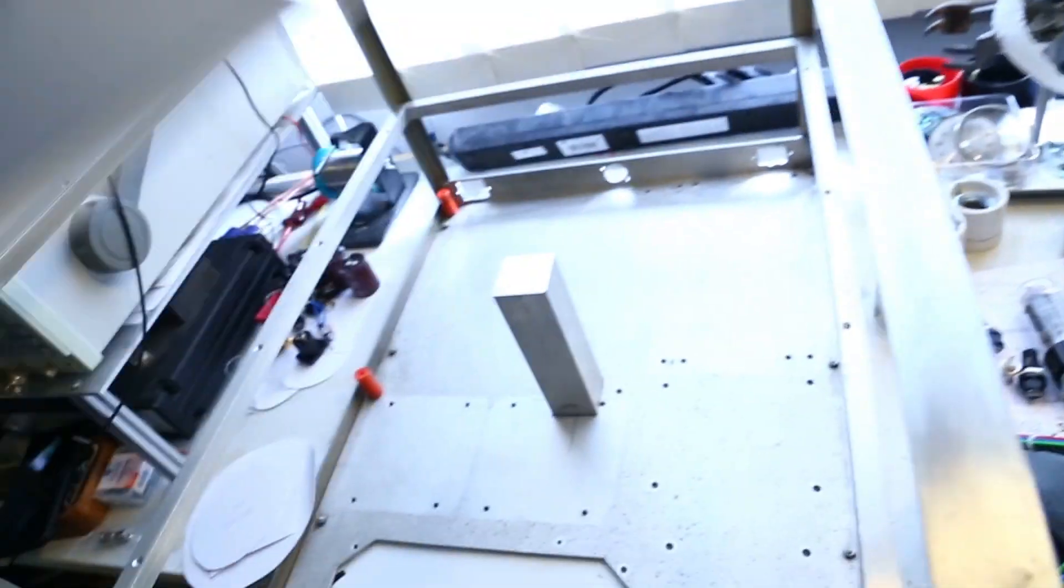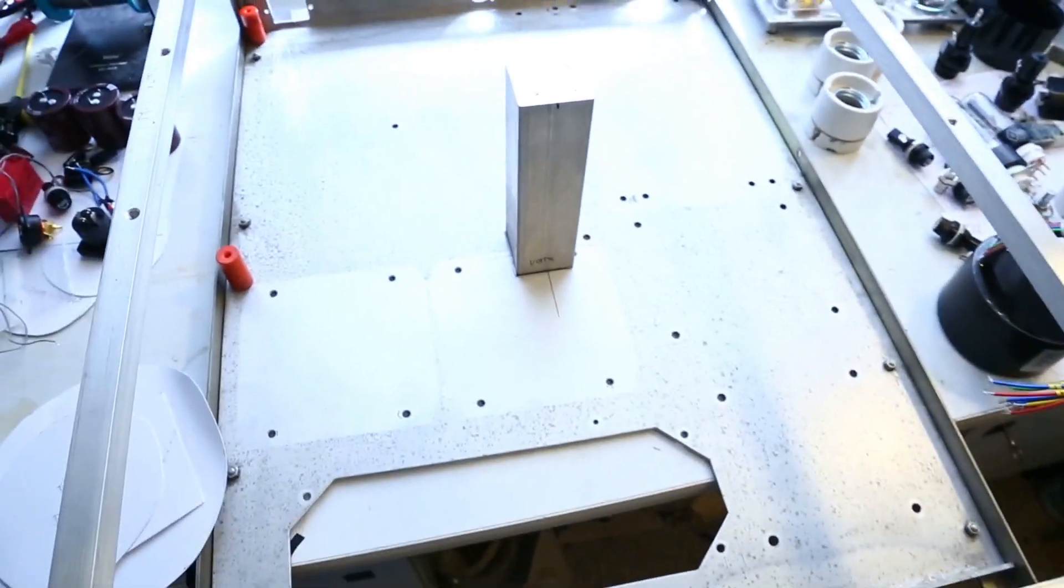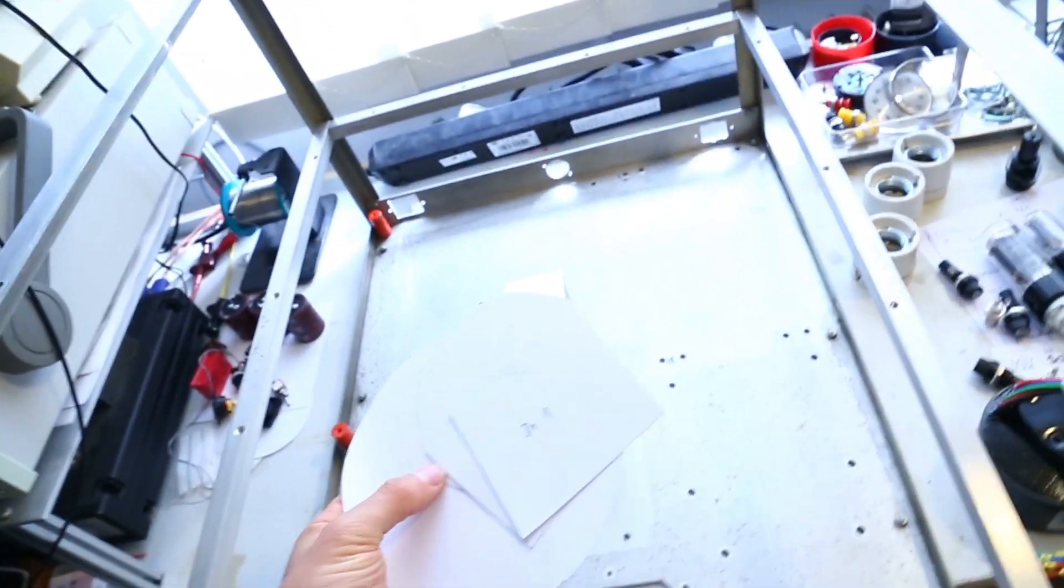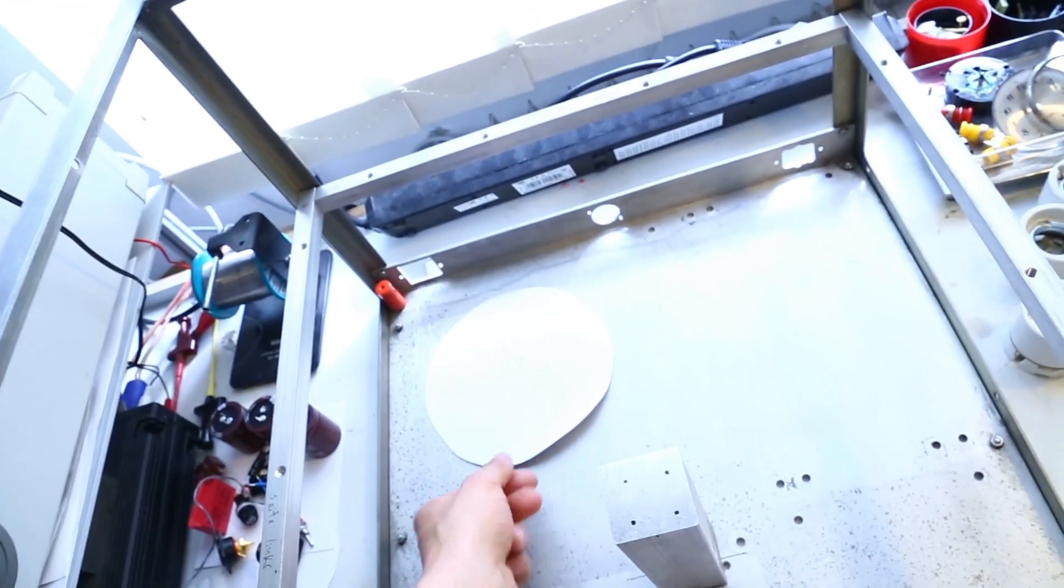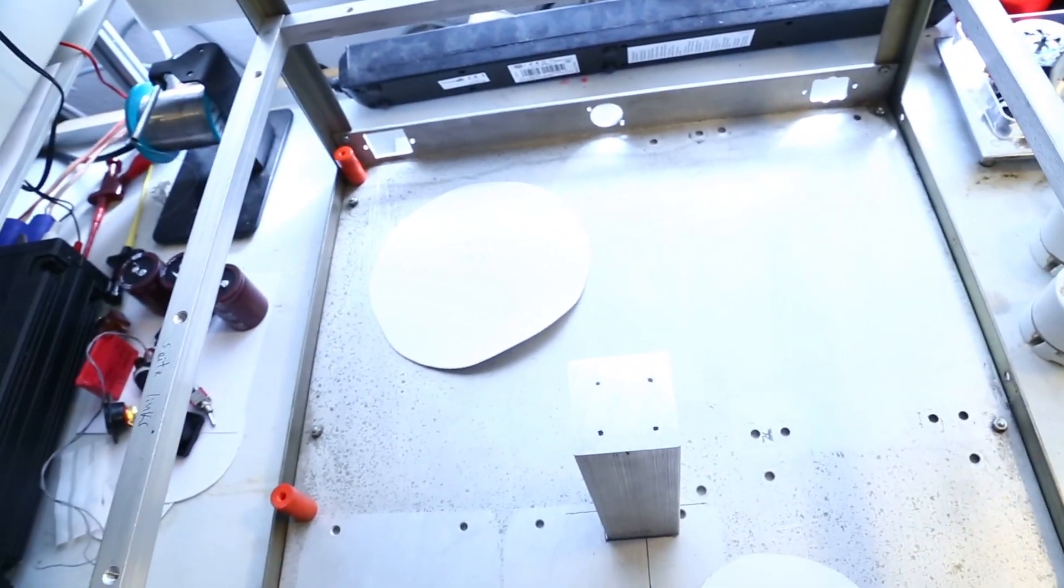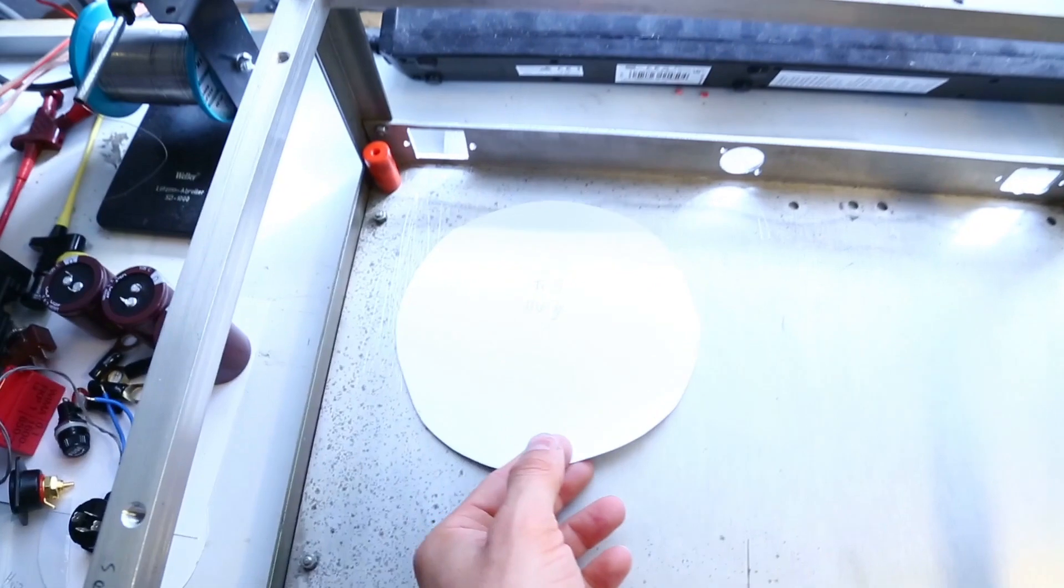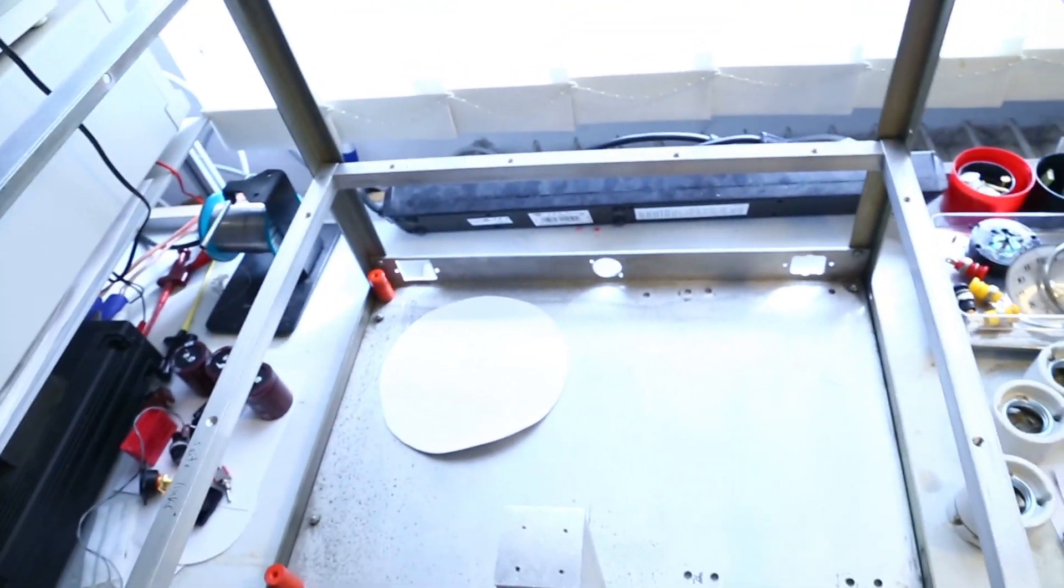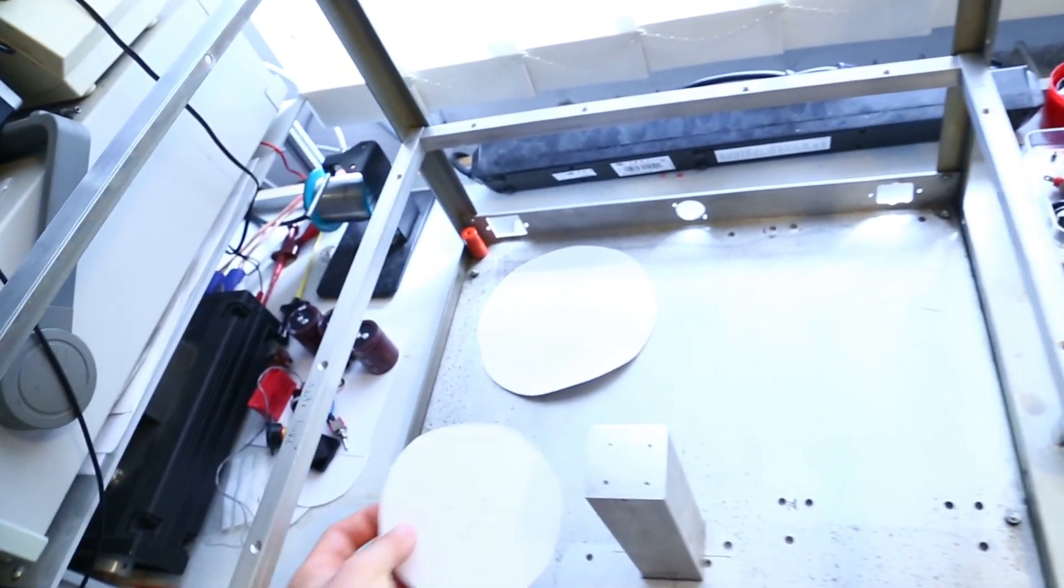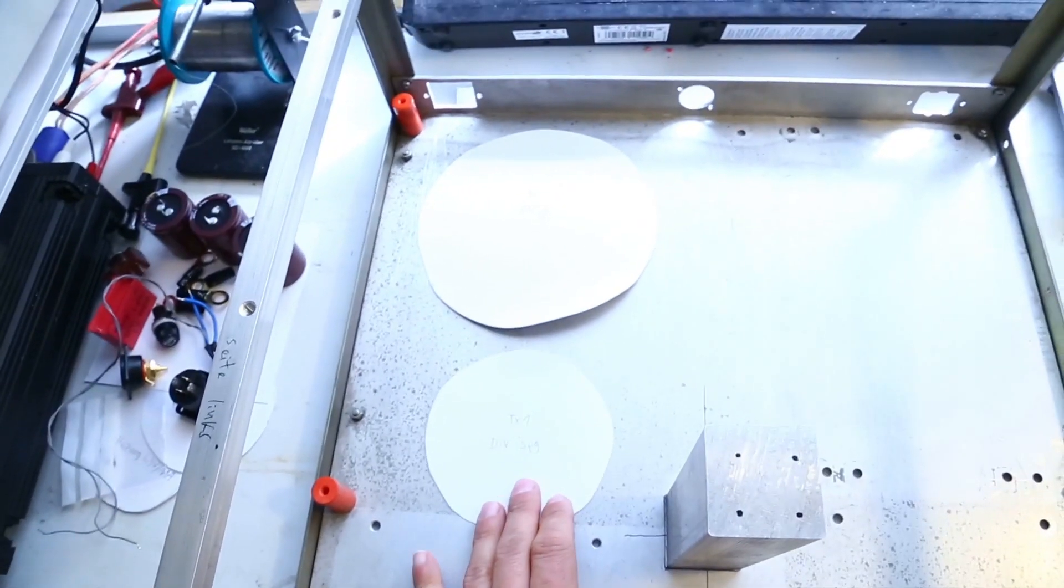At the moment there is nothing. I've made placeholders so I can test everything out. This will be the huge ring core transformer for the high voltage. Maybe it will be here in the rear. Then a smaller transformer for all the other voltages.